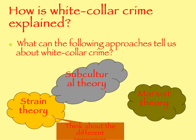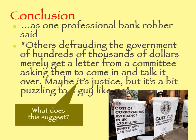So how is white-collar crime explained? Can you make some notes on how strain theory can explain it? How can subcultural theory explain white-collar crime? And how does Marxist theory explain white-collar crime? It's worth taking a step back and thinking about the complete hypocrisy that exists in our judicial system when it comes to white-collar crime. Here's a quote from a bank robber: 'Others defrauding the government of hundreds of thousands of dollars merely get a letter from a committee asking them to come in and talk it over. Maybe it's justice but it's a bit puzzling to a guy like me.' What does this suggest, and what aspects of traditional Marxism could you link in here?